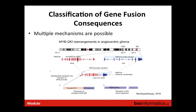A recently published example shows multiple mechanisms caused by just one reciprocal rearrangement — actually an inversion in this case. An inversion creates two breakpoints and can therefore create two gene fusions. In this particular example, one fusion results in silencing of a tumor suppressor, while the other produces a new fusion transcript with an oncogenic function.